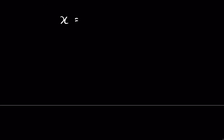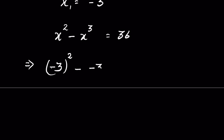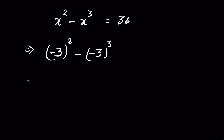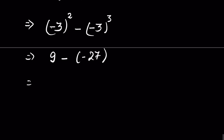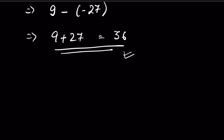Let's verify: when x = −3, the equation is x² − x³ = 36. LHS = (−3)² − (−3)³ = 9 − (−27) = 9 + 27 = 36. LHS equals RHS. How did you solve it? Let me know in the comment section. Thanks for watching.